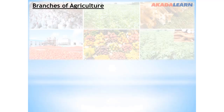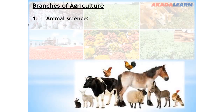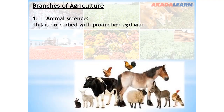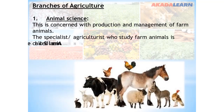Branches of agriculture. The first one is animal science. Animal science is concerned with the production and management of farm animals. The specialist in agriculture who studies farm animals is called an animal scientist.